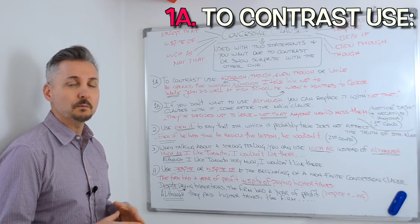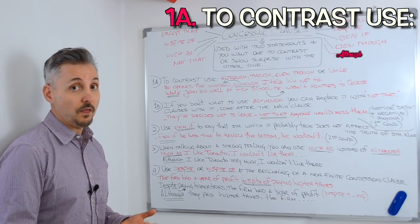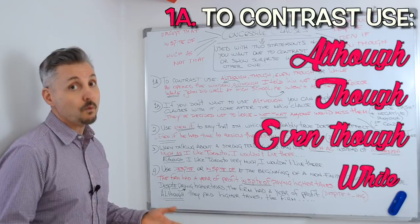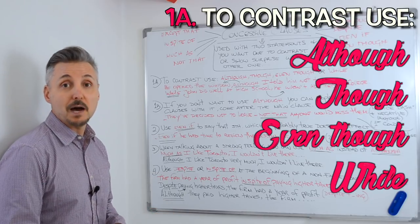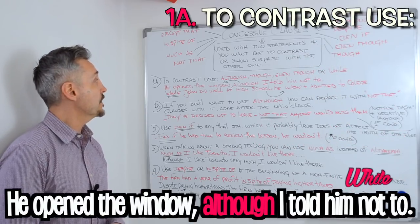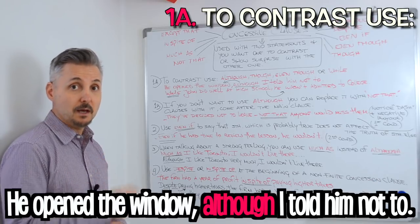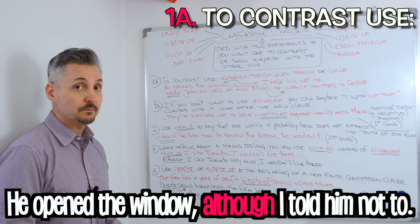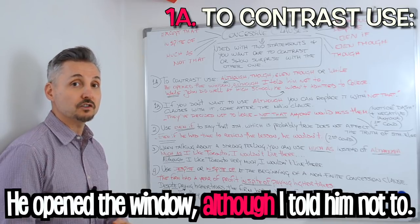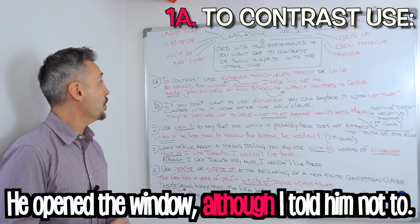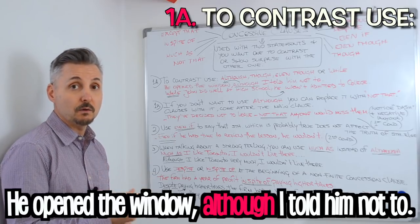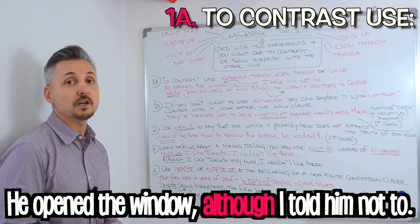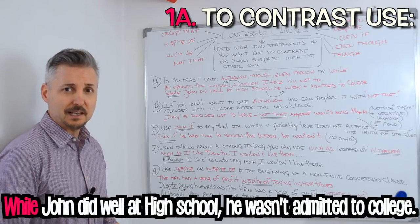Of course, the first one will be to contrast. And we use although, though, even though, or while. Like in my example: He opened the window, although I told him not to. So here we show a contrast with the main clause. He opened the window — although — contrast — although I told him not to. Let's take a look at another example.